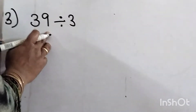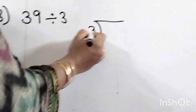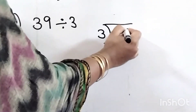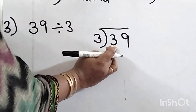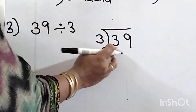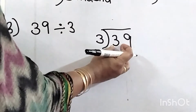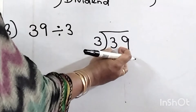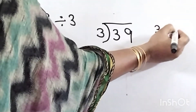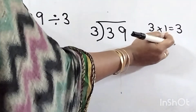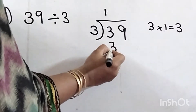Now we will move on to the next sum: 39 divided by 3. Here 3 goes into 39. Look for the first digit — it is 3, and the divisor is also 3. Both are equal, so we can divide with the first digit. We know 3 ones are 3, so 1 times 3 — write 1 at the top and write 3 here.